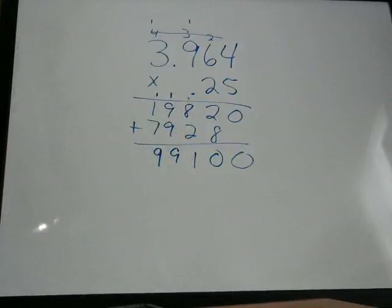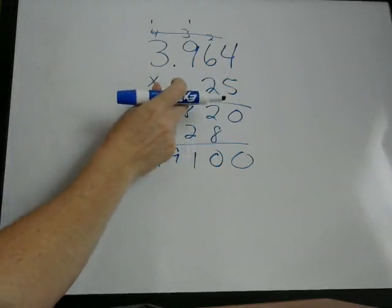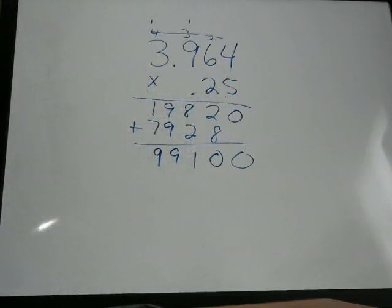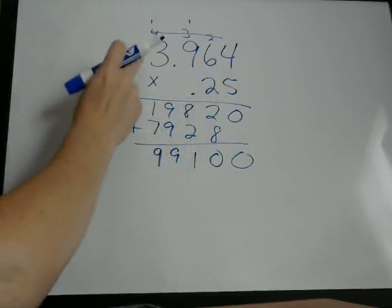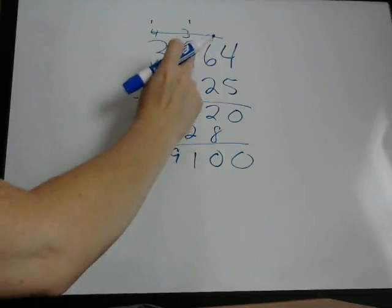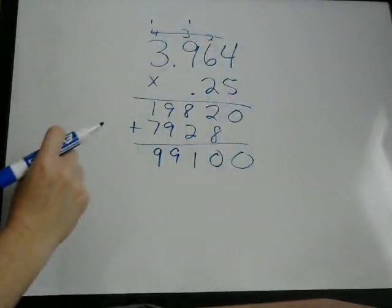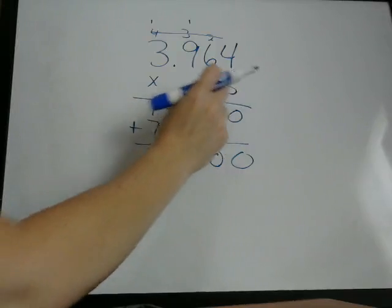Now where we decide to put the decimal in the final answer depends on how many numbers were behind the decimal in our original two numbers that we're multiplying. We're multiplying 3.964 times 0.25. There's 1, 2, 3 numbers behind the decimal in this number, and there's 2 in that one.